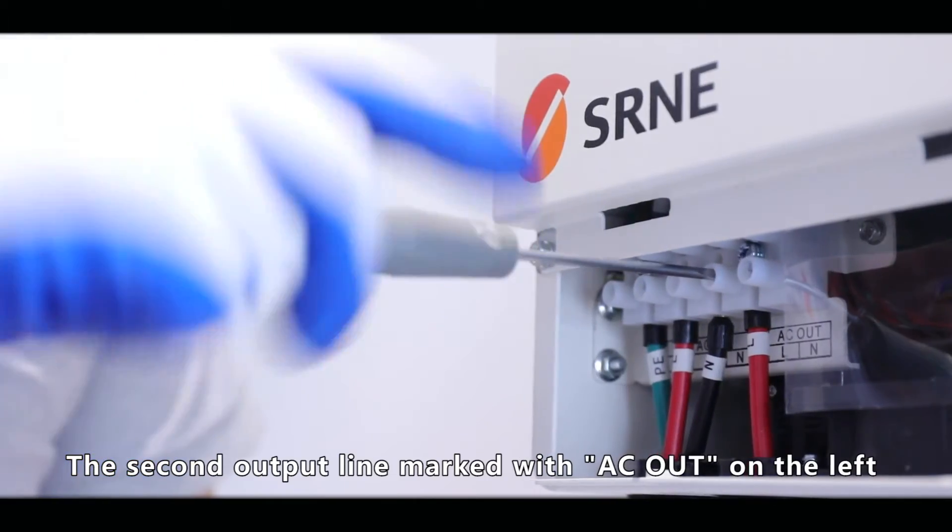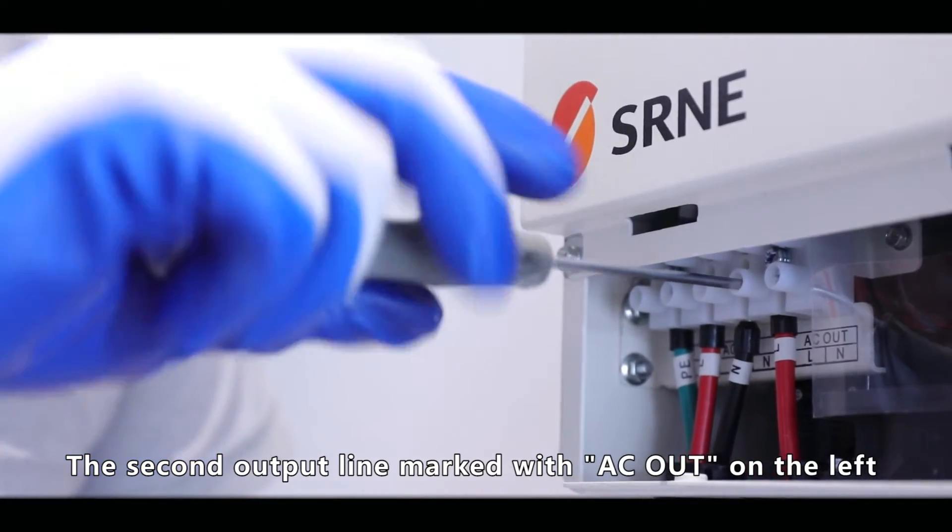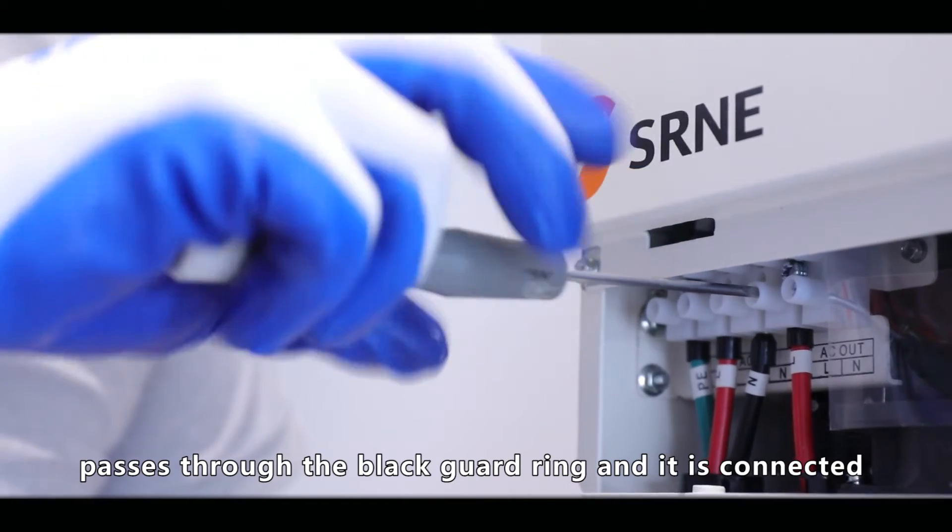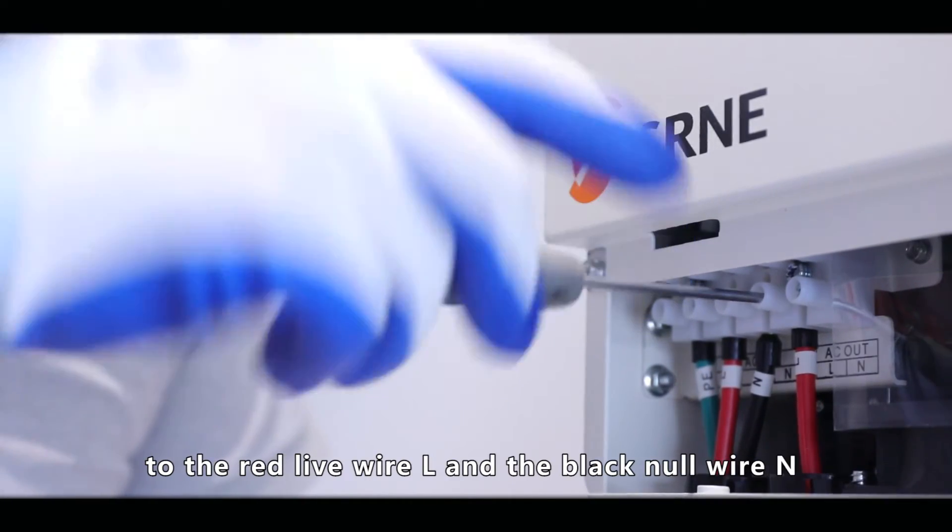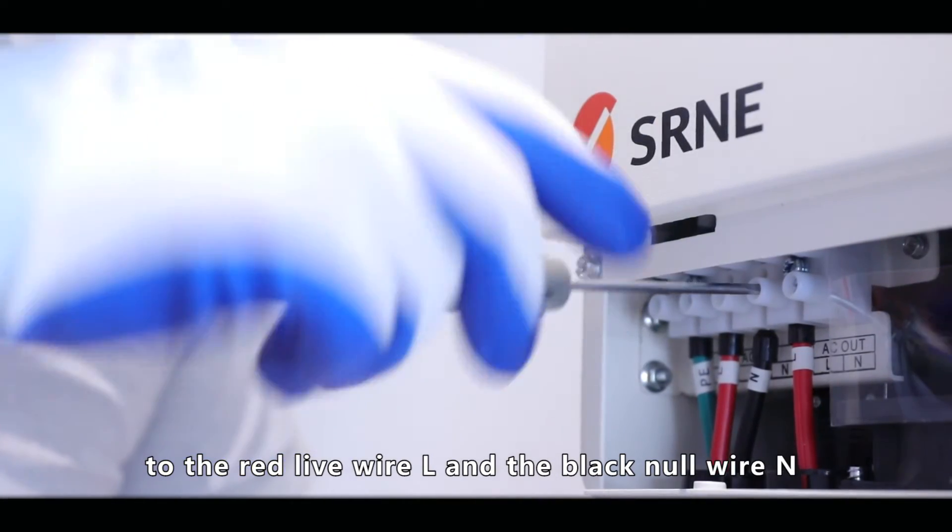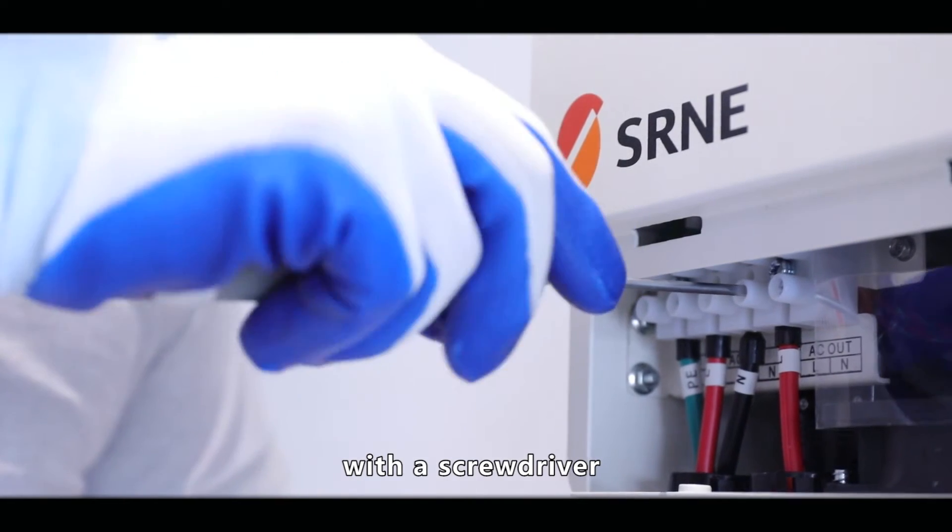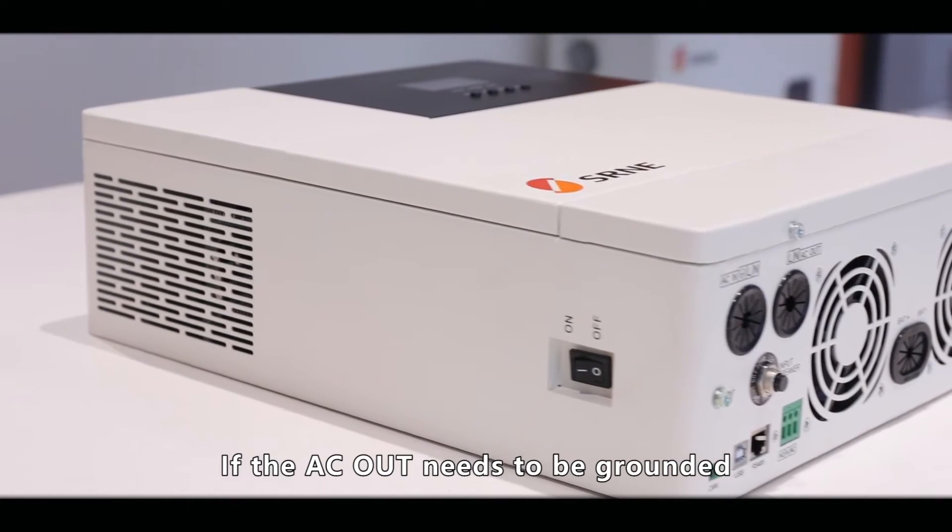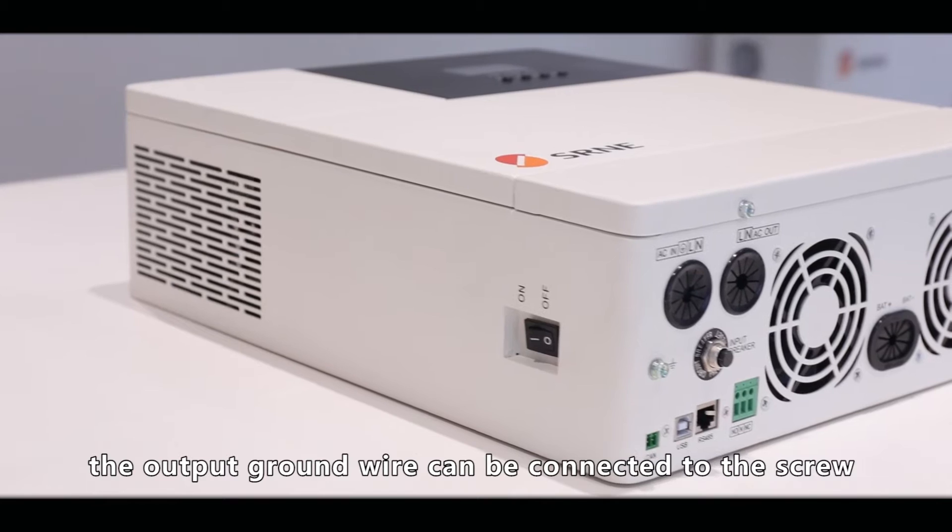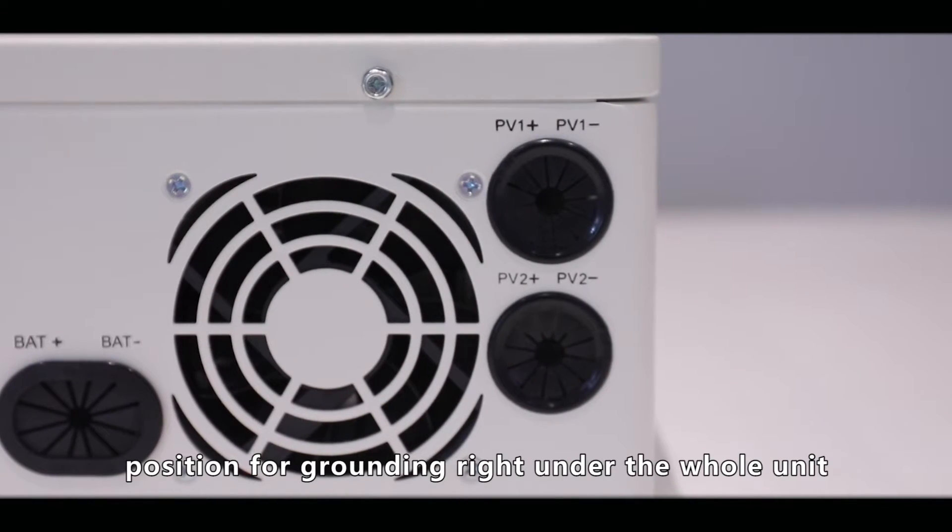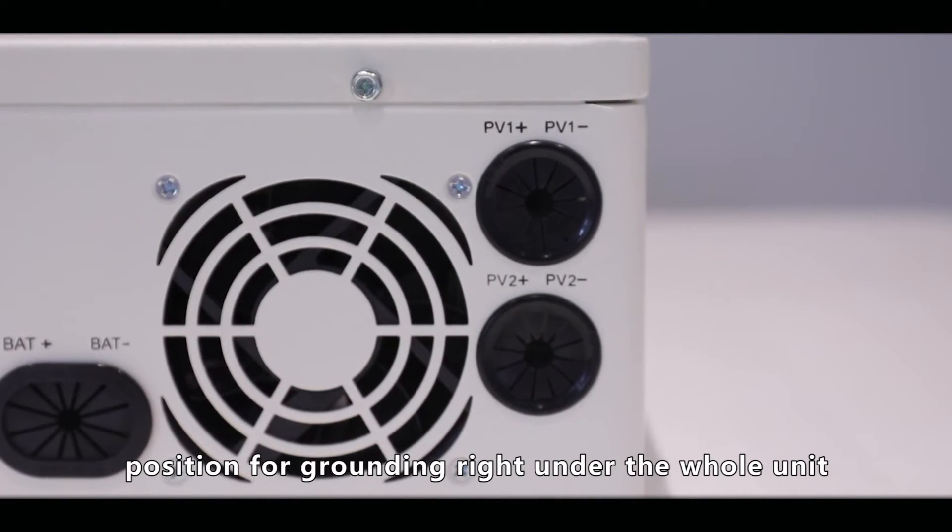The output line marked with AC out on the left passes through the black guard ring and is connected to the red live wire L and the black null wire N with the screwdriver. If the AC out needs to be grounded, the output ground wire can be connected to the screw position for grounding right under the whole unit.